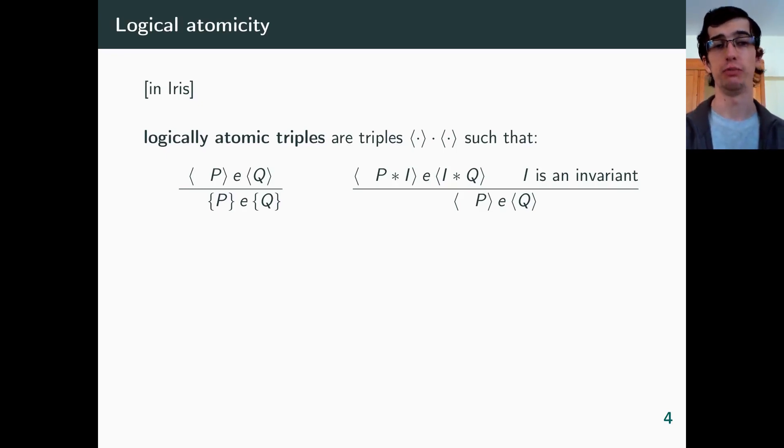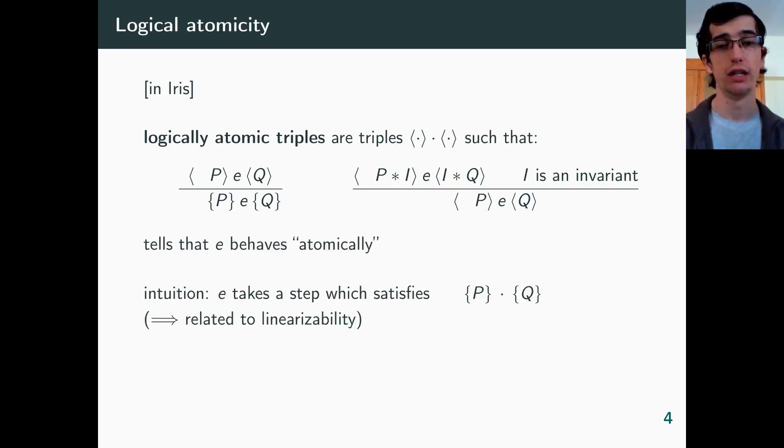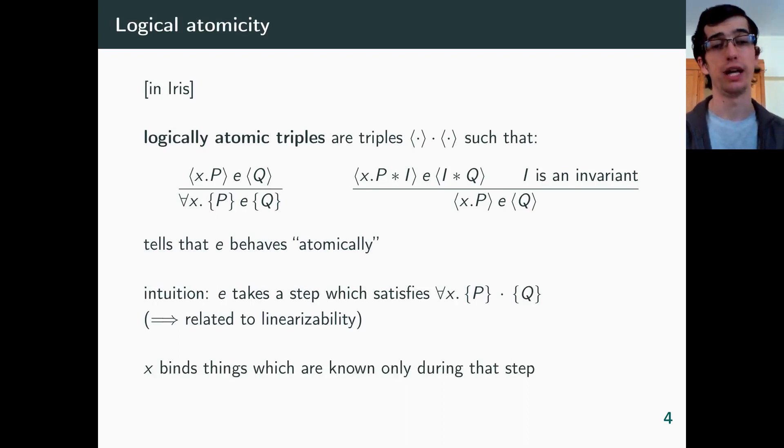First, a logically atomic triple entails the regular triple. Second, we can open invariants around it freely. This is a way of stating that e is logically atomic, and by that we mean more formally that there is a step in the execution of e, such that e behaves as if everything happened during that step. It is this step which satisfies the whole triple with p and q, so p and q need not hold at the start and end of e, but only just before and just after the atomic step. Because of this, we need a binder to be able to name things which we only know during the atomic step, when we actually open the invariant. So here, x is bound in both p and q.